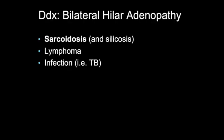So we have bilateral hilar and mediastinal adenopathy. The purpose of this video is to train your eye. The primary differential is sarcoidosis and silicosis, lymphoma, and infectious abnormalities — specifically tuberculosis. This is a case of sarcoidosis.